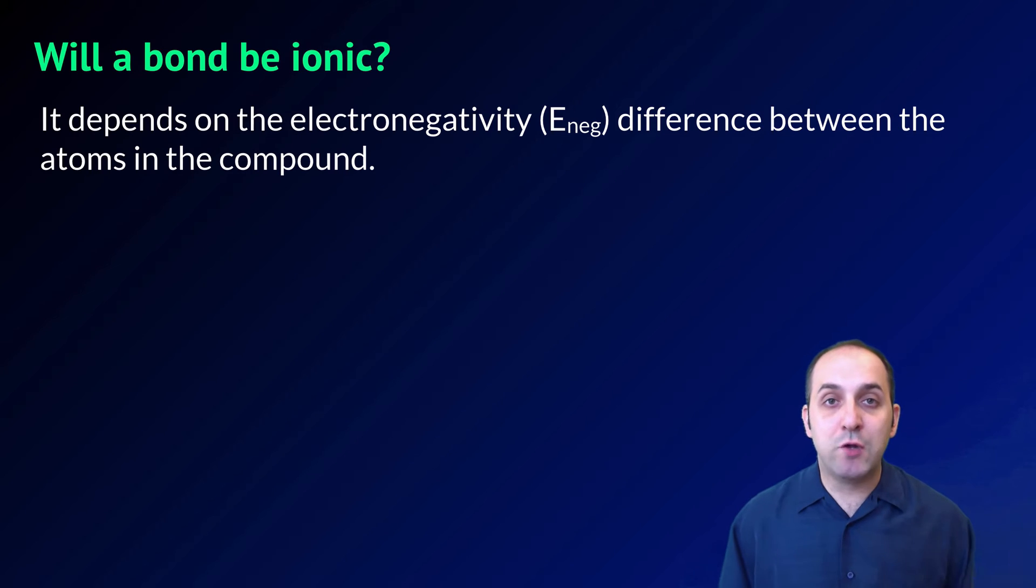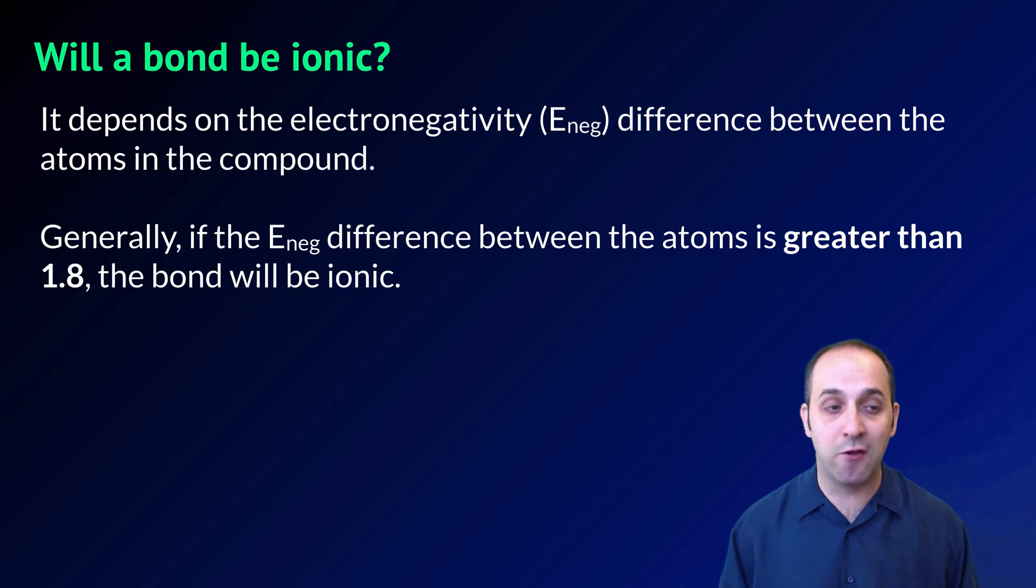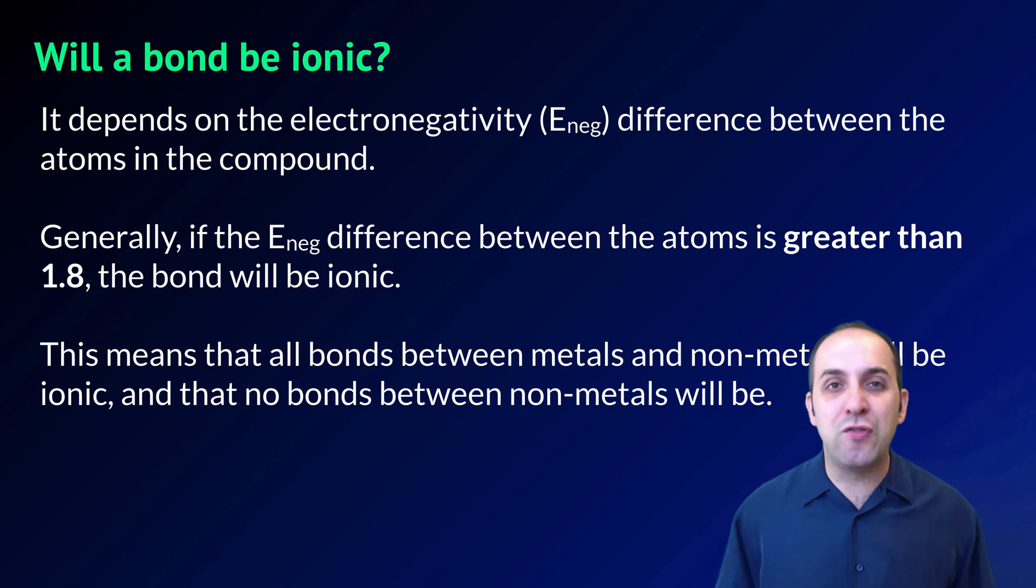We do need to be able to figure out if a particular bond is going to be ionic or not. And that's very much going to depend upon the electronegativity difference between the atoms in the compound. Generally speaking, if the electronegativity difference between the atoms is greater than 1.8, the bond will be ionic. The more electronegative atom will have a strong enough pull on the less electronegative atoms electrons that it will actually result in the transfer of those electrons. Among other things, this basically means that all bonds between metals and nonmetals are going to be ionic and that no bonds between nonmetals are ever going to be ionic.